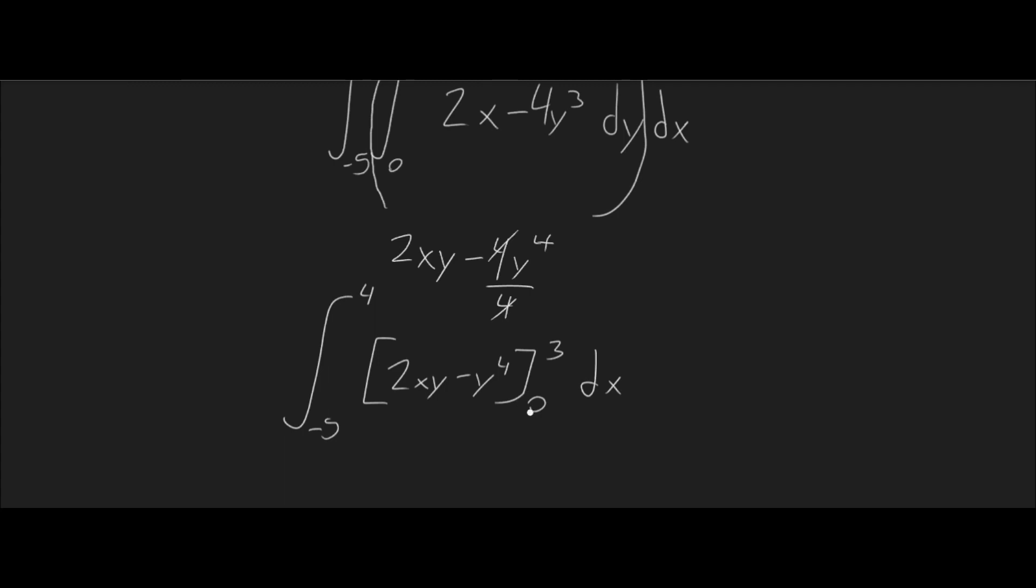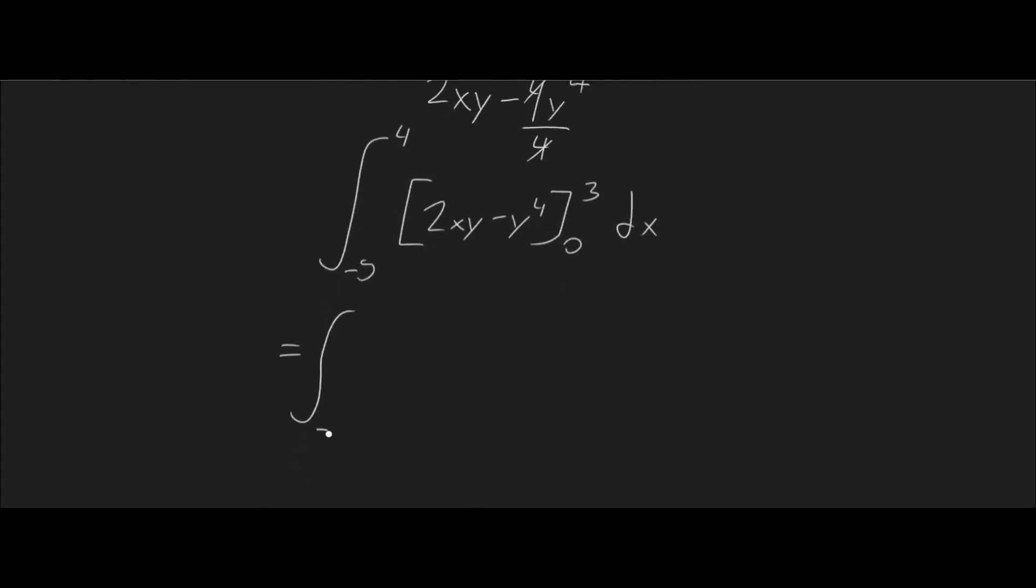So, now we're going to swap out. We're going to evaluate this from 0 to 3. So, we're going to replace the y with 0 and 3. And this will give us the double, the second integral is still there. So, minus 5 to 4 of, well, when it's 0, this whole thing equals 0. So, when it's 3, it's 2 times x times 3 minus 3 to the power of 4.